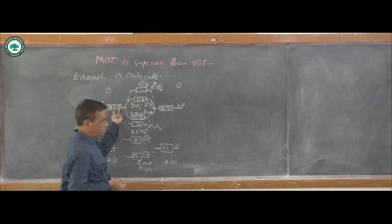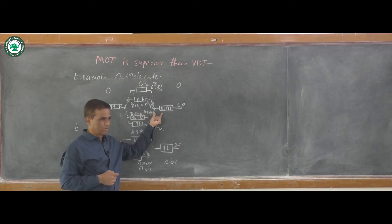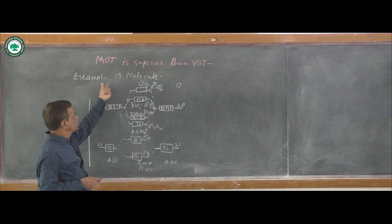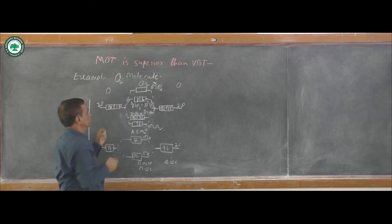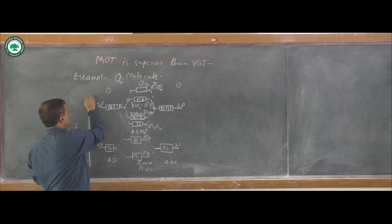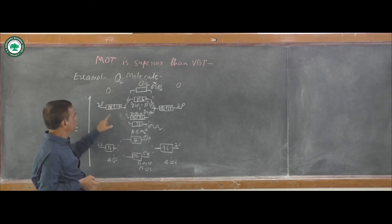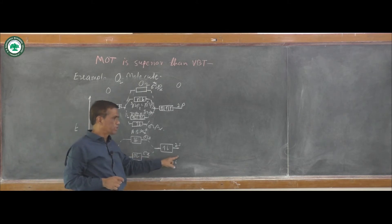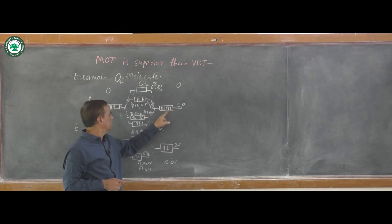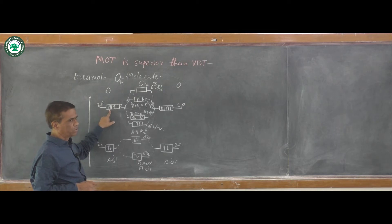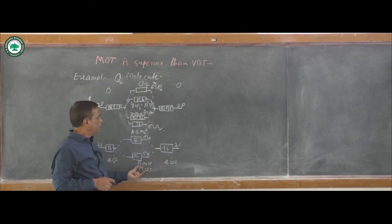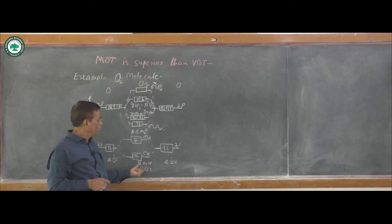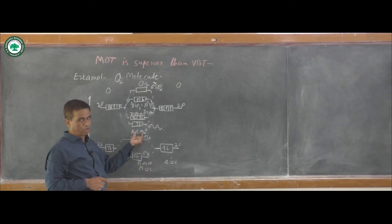Whatever atomic orbitals are combined, that many molecular orbitals are formed. O2 molecule is formed by combination of two oxygen atoms. In the first 2s orbital, two electrons; in the second oxygen 2s orbital, two electrons; and the 2p orbital contains four electrons. These atomic orbitals combine and corresponding molecular orbitals — bonding molecular orbitals and anti-bonding molecular orbitals — are formed.